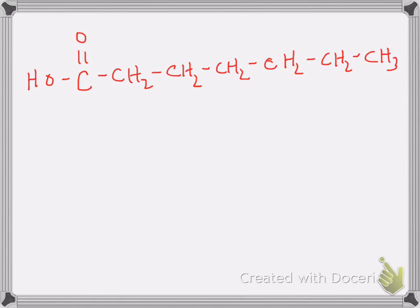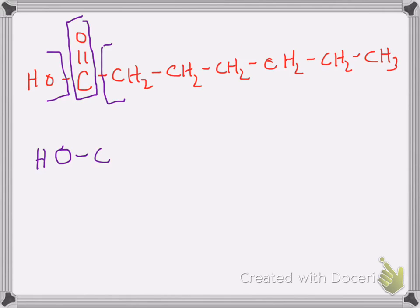The first question I always ask myself when naming a molecule is: what family does it belong to? I see this carboxyl group over here on the left-hand side, and attached to it I have an R group and an OH. If I write that out in general form, I would have an OH connected to a carbonyl connected to an R group — that's the general structure of a carboxylic acid.